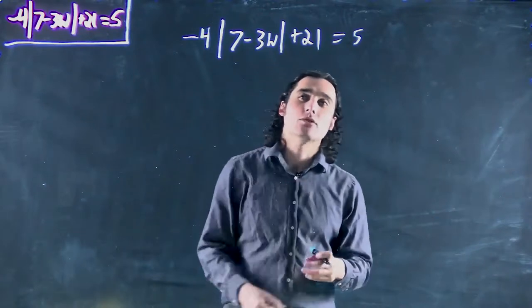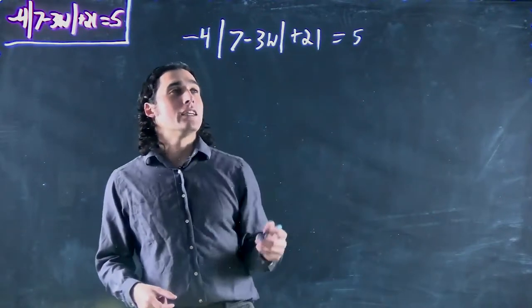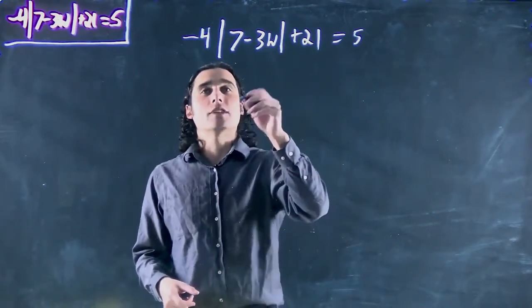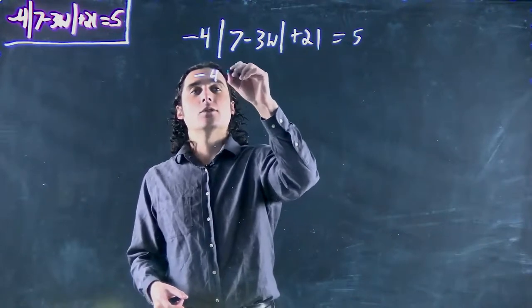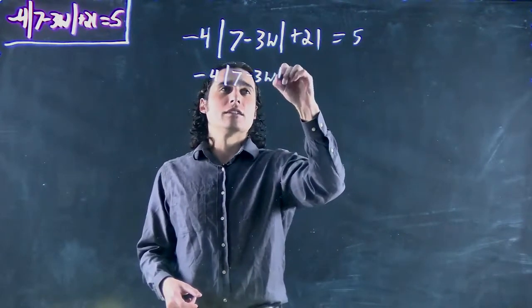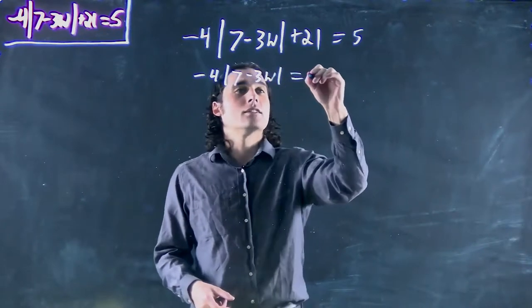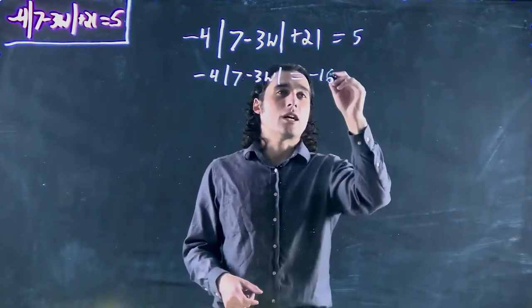Again we have to get the absolute value on its own. So we can subtract 21 from both sides. -4 absolute value 7 - 3w equals -16.